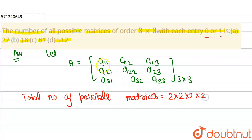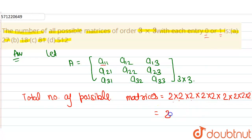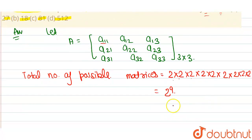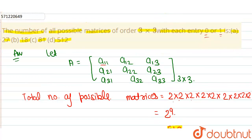Why is 2 multiplied 9 times? Because for each entry we have 2 possible values, that is 0 and 1. That's why the total number of possible matrices equals 2 × 2 × 2 × ... (9 times), which is 2 raised to the power 9. The value of 2⁹ is 512, so our final answer is 512, which matches option D. Thank you.